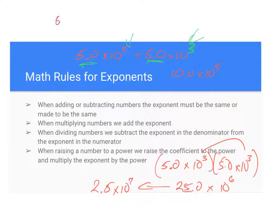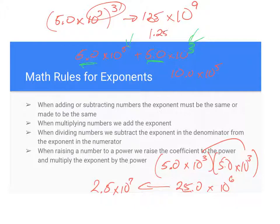And so let's say we have 5.0 times 10 to the third cubed, right? So five to the third is, was it 125? Then we're going to multiply these two guys here, times 10 to the ninth. And again we can move that over, and we actually get 1.25 times 10 to the 11th would be our final value. And so there we have our math rules for our exponents.